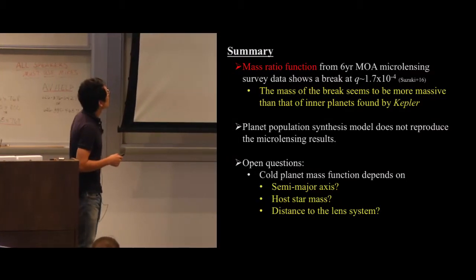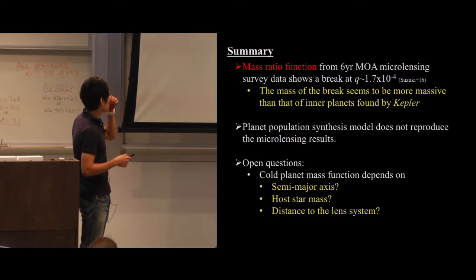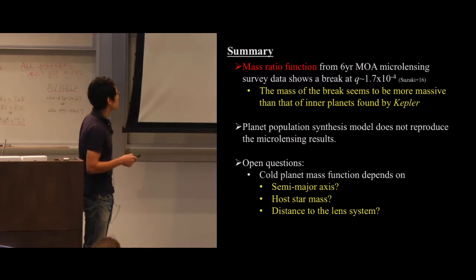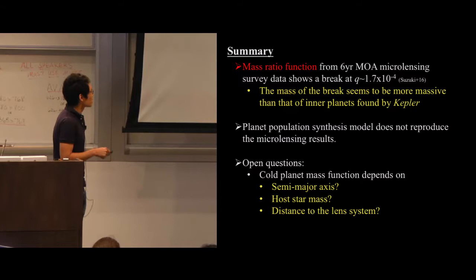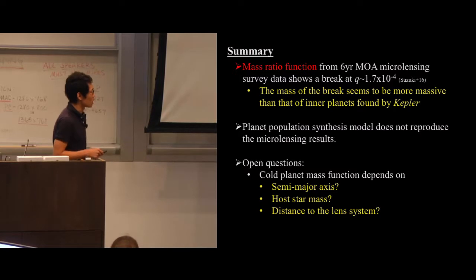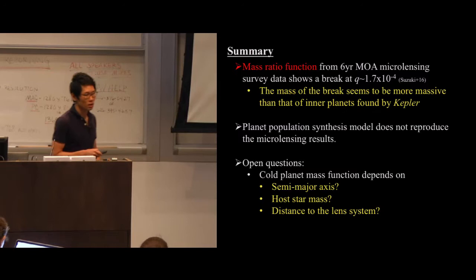In summary: the MOA mass ratio function shows a break at 1.7×10⁻⁴ in mass ratio. The break mass appears more massive than the Kepler inner-planet break. Planet population synthesis models do not reproduce microlensing results. Open questions remain — the cold-planet mass function may depend on semi-major axis, host star mass, and distance to the lens system. We hope K2, Spitzer, and finally WFIRST will answer these questions.